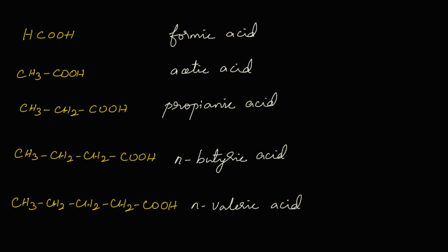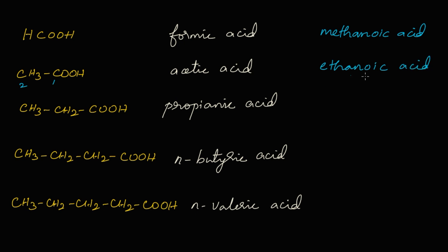Now let's give the IUPAC names. HCOOH has only one carbon — methane — and since COOH is present we write 'oic acid', so it is methanoic acid. CH₃COOH has two carbons — ethane — and with the oic acid suffix it becomes ethanoic acid. That is the IUPAC name of acetic acid. The three-carbon compound is propanoic acid.